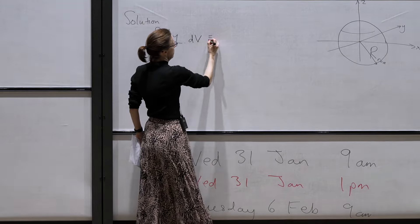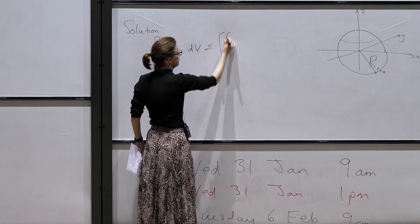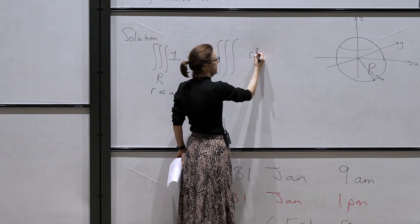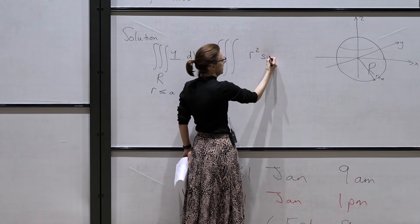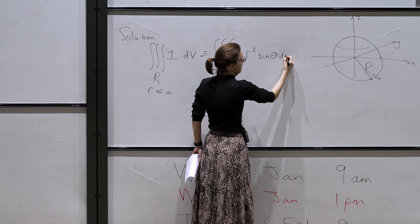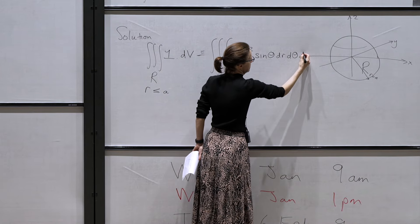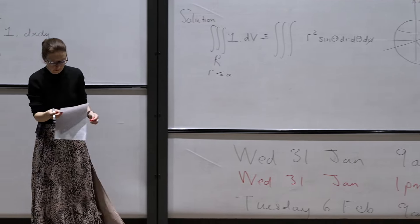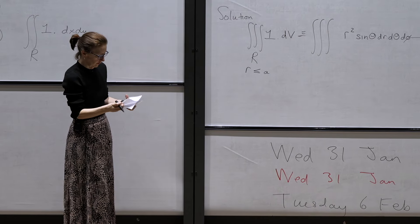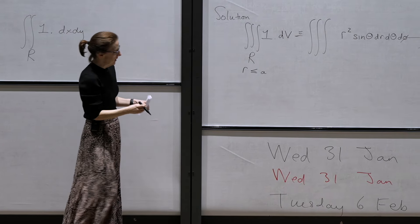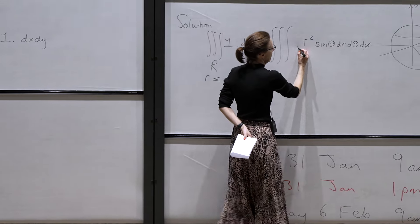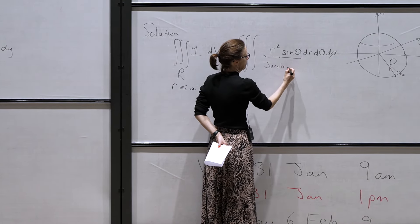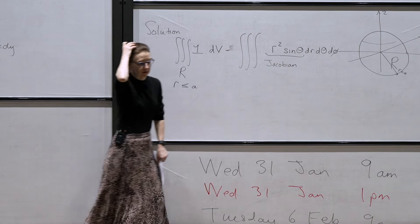Going into the new coordinate system, dv becomes r² sin(theta) dr dtheta dphi. Now we work out the limits: r goes between 0 and a, theta takes all values between 0 and pi, and phi — the azimuthal angle — goes between 0 and 2pi.